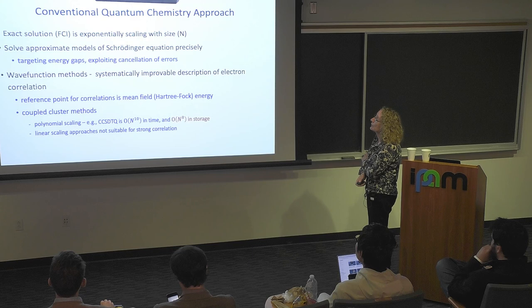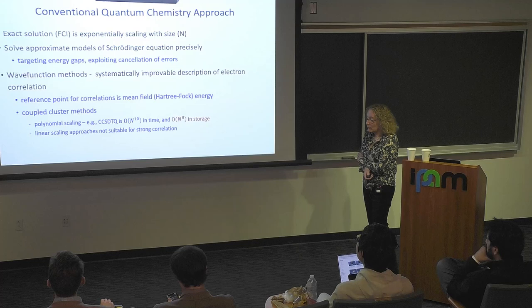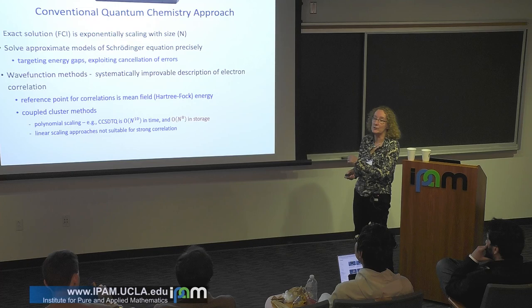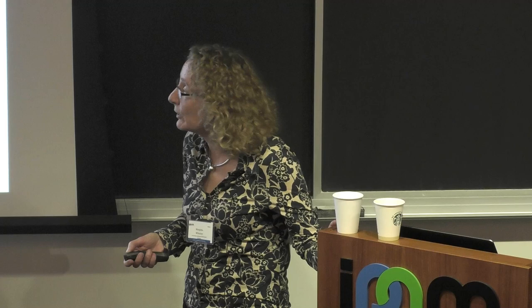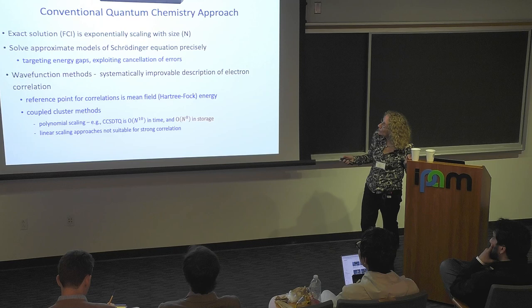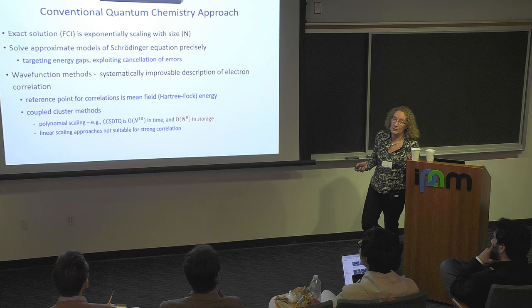Let's think about how conventional quantum chemistry addresses correlations. We do have an exact solution: full configuration interaction. With a finite basis set and a finite number of electrons, you construct all possible determinants within the Pauli principle and diagonalize the Hamiltonian in that basis. The problem is that the number of determinants scales exponentially with system size — you'd rapidly run out of options after about 100 electrons.